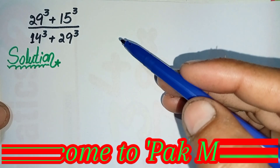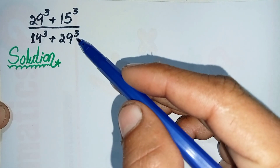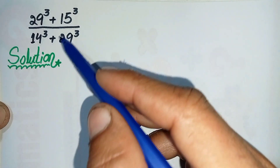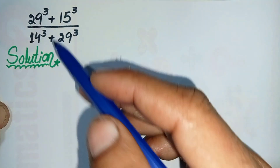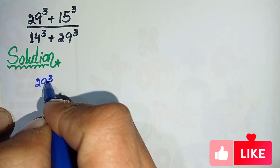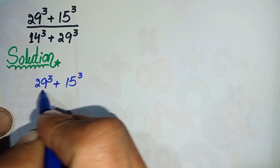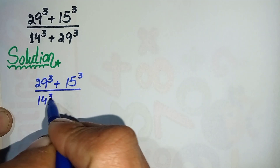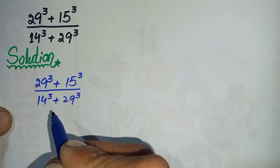Hello everyone, welcome to Parkmas. In this video I'm going to solve this interesting exponential math problem. We will write the solution and rewrite the question, then try to solve it step by step. The question is: (29³ + 15³) divided by (14³ + 29³).